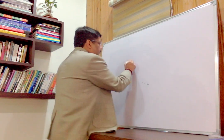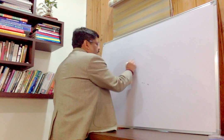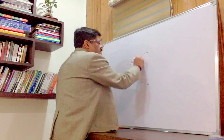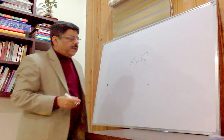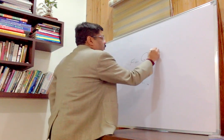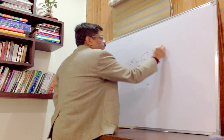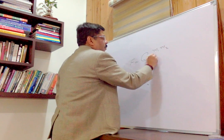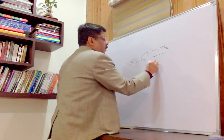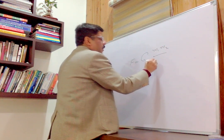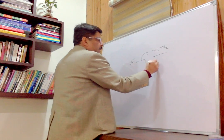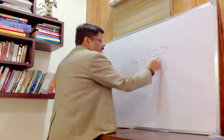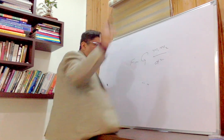F equals G — where G is the universal gravitational constant — times M1 and M2, which are the mass of object 1 and mass of object 2, divided by D squared, the square of the distance between them.